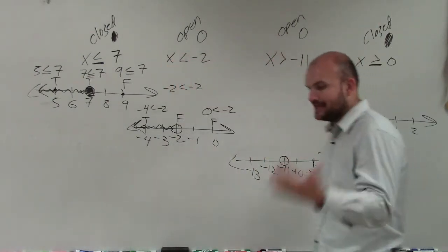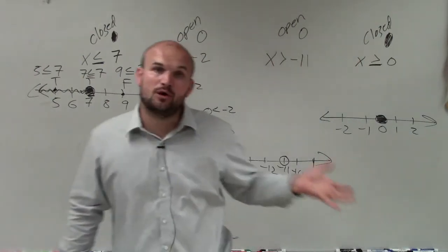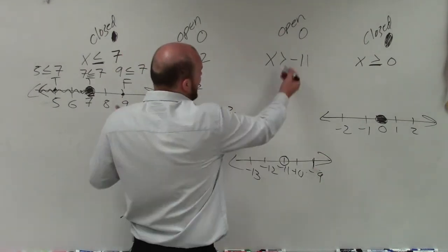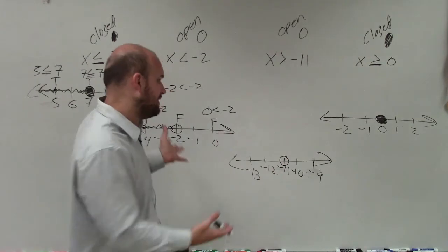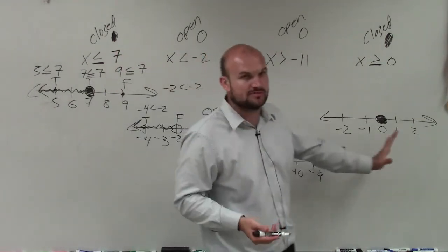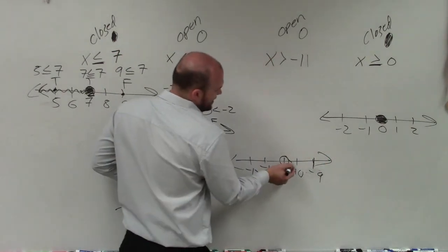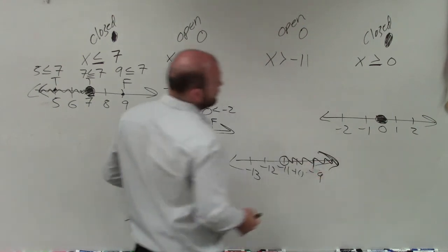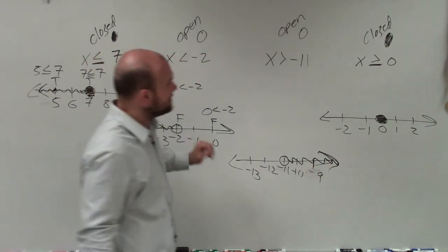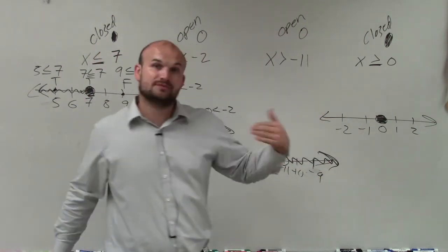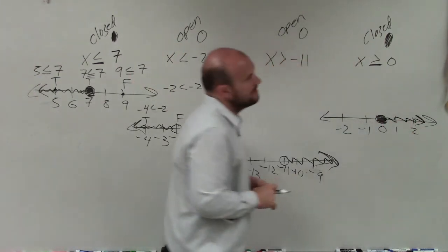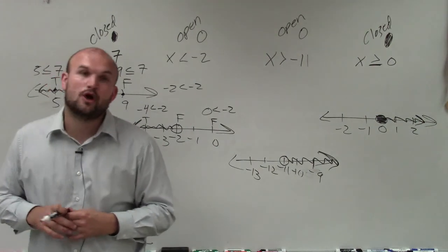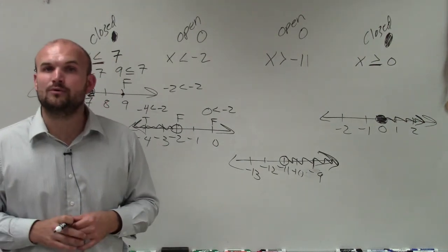I also think that once you kind of get used to this, a lot of times you can say what the inequality is out loud. So I can say x is greater than negative 11. What are the numbers that are greater than negative 11? Well, that's obviously going to be the numbers that are going towards my positive, which will be in that direction. And since it's greater than, not greater than or equal to, that will remain open. And then here, x is greater than or equal to 0. Obviously again, that has to be in the same direction of positive numbers. So there you go, ladies and gentlemen. That is just a quick overview video of how you graph inequalities. Thanks.